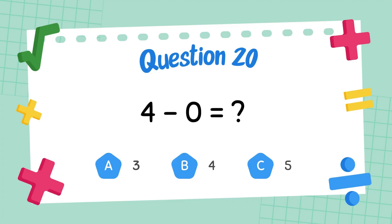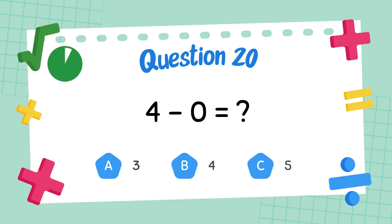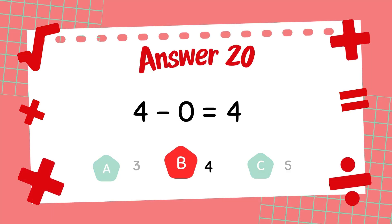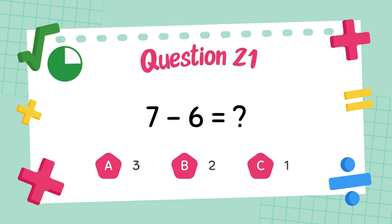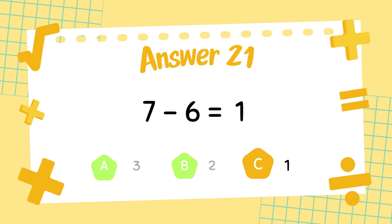What is 4 minus 0? The answer is 4. What is 7 minus 6? The answer is 1.